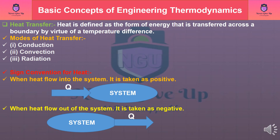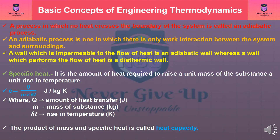Sign Convention for Heat: when heat flows into the system, it is taken as positive; when heat flows out of the system, it is taken as negative. A process in which no heat crosses the boundary of the system is called an adiabatic process — one in which there is only work interaction between the system and surroundings. A wall impermeable to the flow of heat is an adiabatic wall, whereas a wall that permits the flow of heat is a diathermic wall.